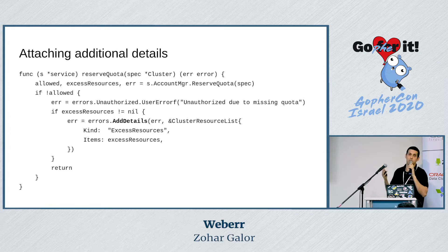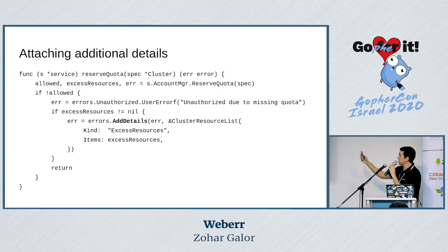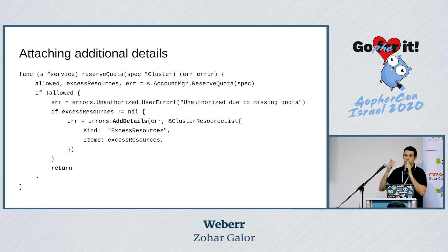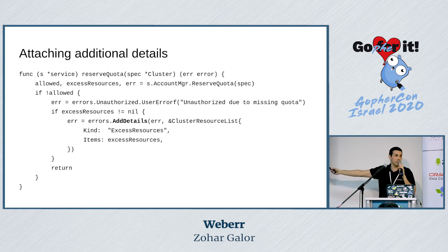I also want to show how to attach additional details to an error. When we try to provision a new cluster, we check if the user has quota to create it. If the user has exhausted all their quota, we want to let the user know all the resources they've already used and why they don't have quota. So we attach a cluster resource list to the error using AddDetails.